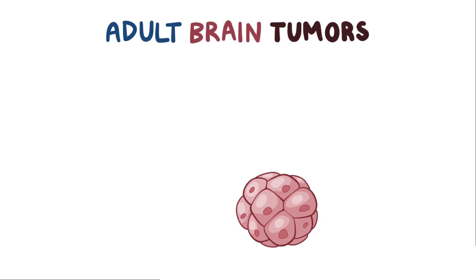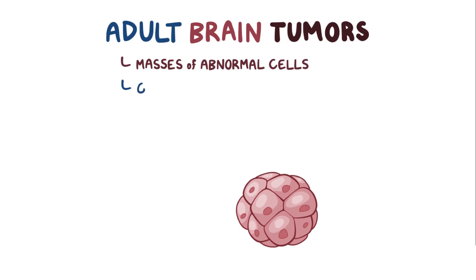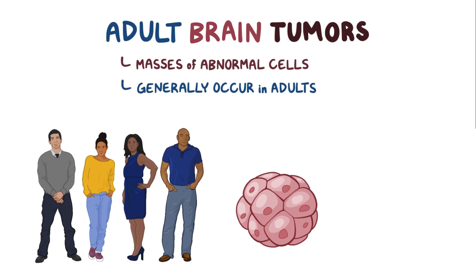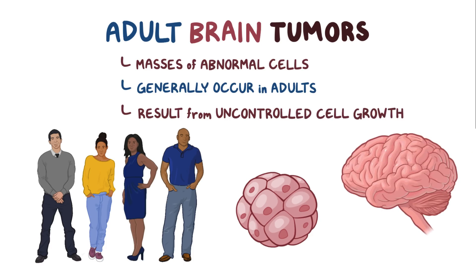Adult brain tumors are masses of abnormal cells that generally occur in adults and result from the uncontrolled growth of those cells within the brain.